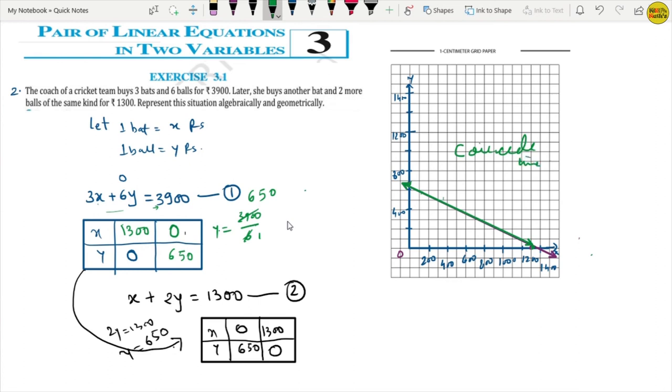Coincident line. This is the graphical plot. And what was the equation for this? 3x plus 6y equals to 3,900. And what is the equation for this line? x plus 2y equals to 1,300. Clear?